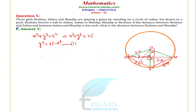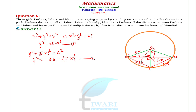इसी तरह triangle RKS के लिए, hypotenuse² = base² + perpendicular², तो RS² = Y² + KS², जहाँ KS = 5 − X। इसलिए Y² + (5 − X)² = 6², which gives Y² = 36 − (5 − X)². इसको Equation 2 कहते हैं।